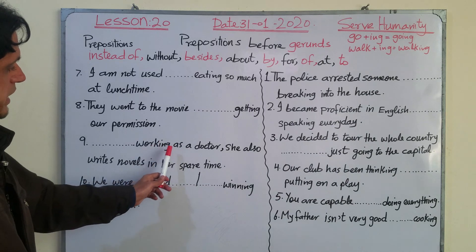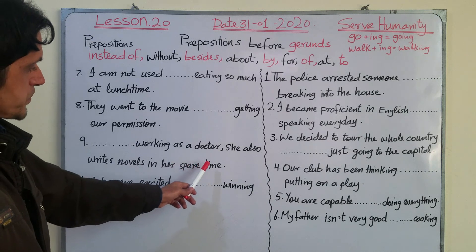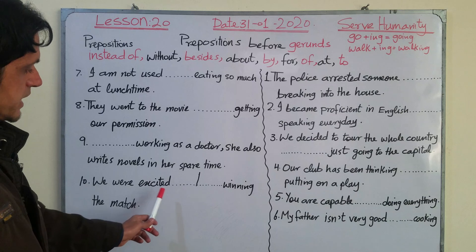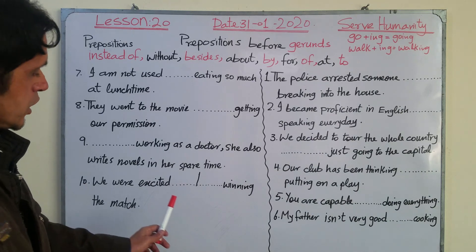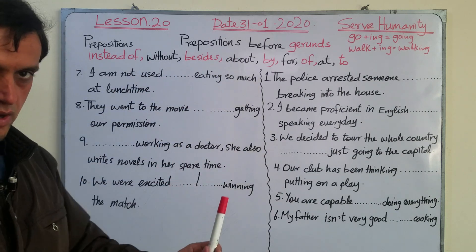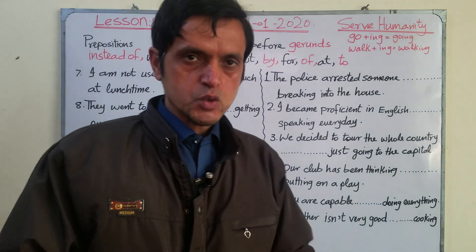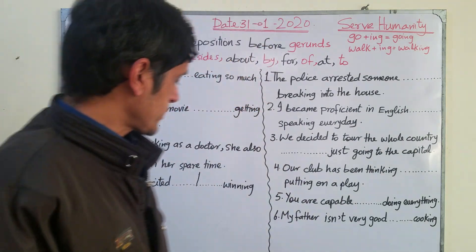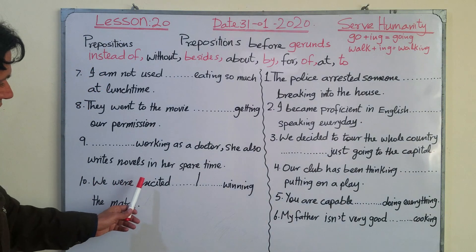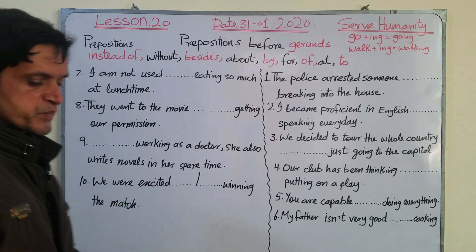Number seven: 'I am not used ___ eating so much at lunch time.' Number eight: 'They went to the movie ___ getting our permission.' Number nine: '___ working as a doctor, she also writes novels in her spare time.' Number ten: 'We were excited ___ winning the match' — here you have two possible preposition options, as sometimes more than one preposition fits.